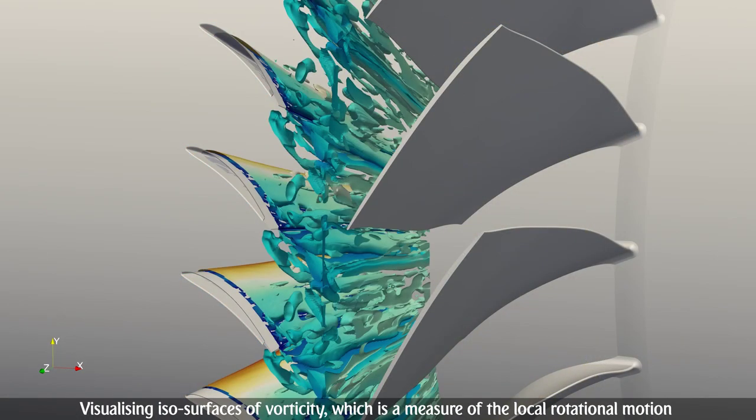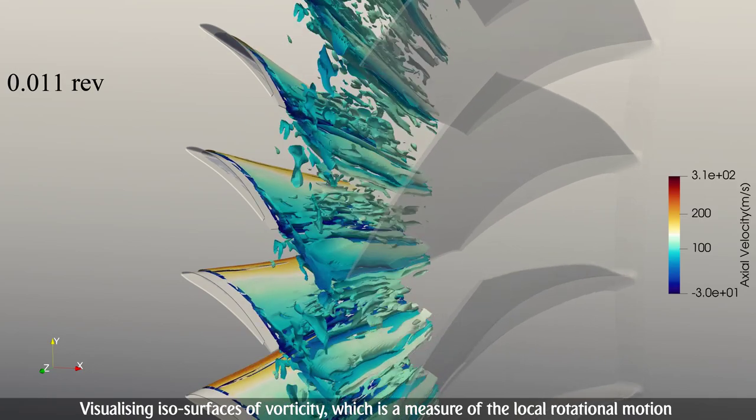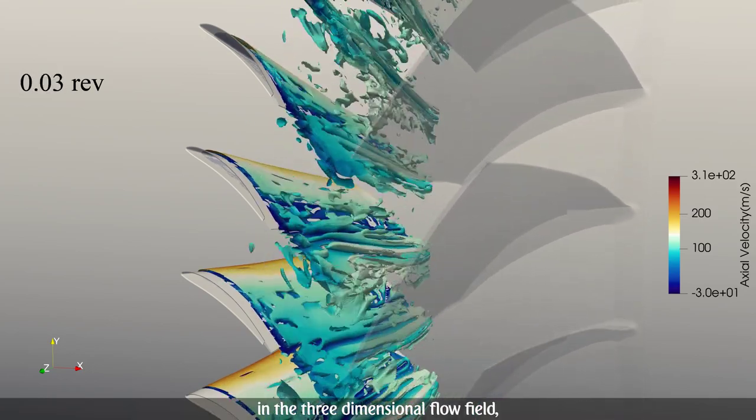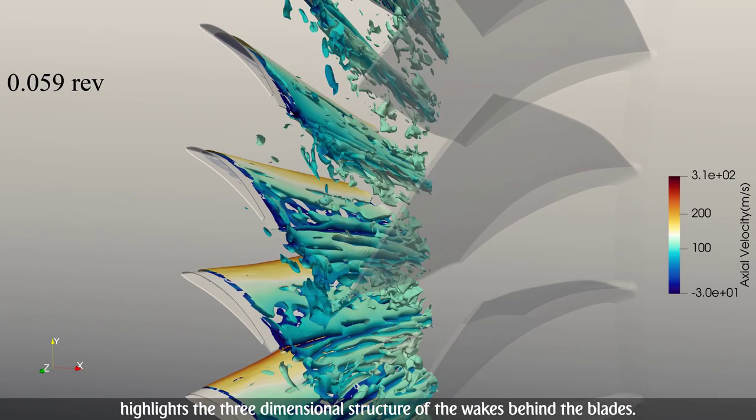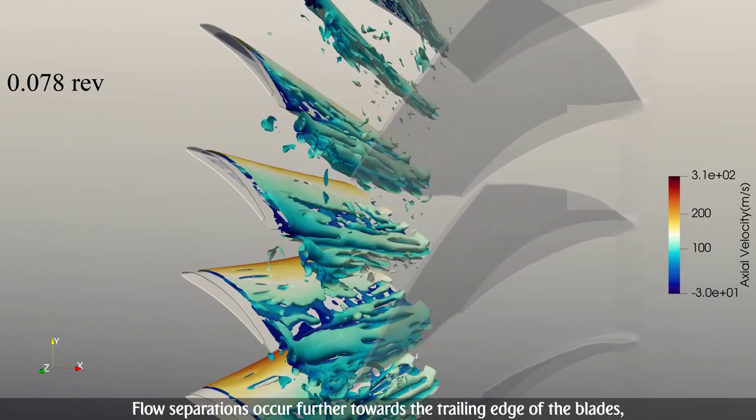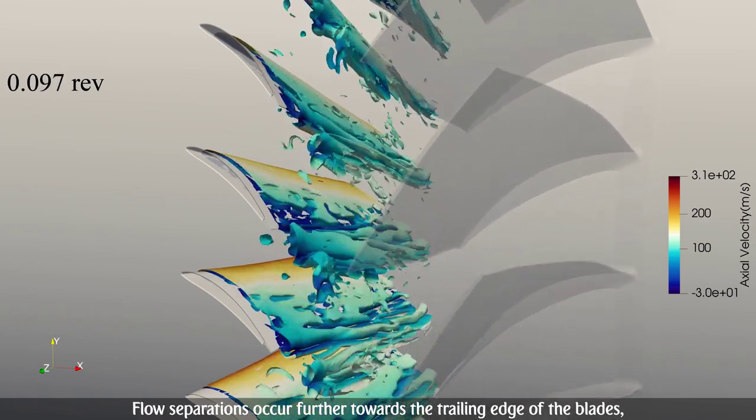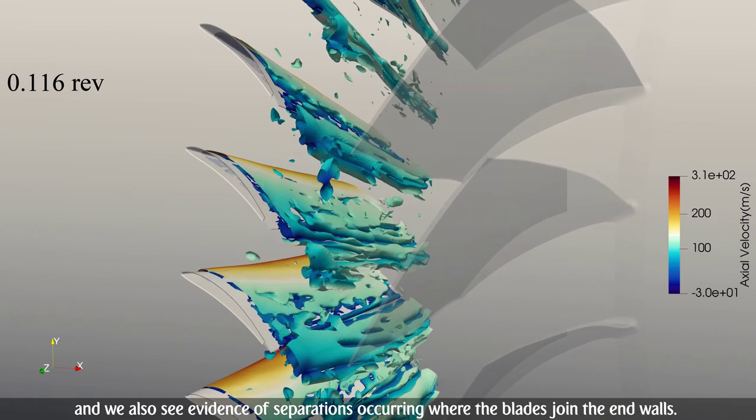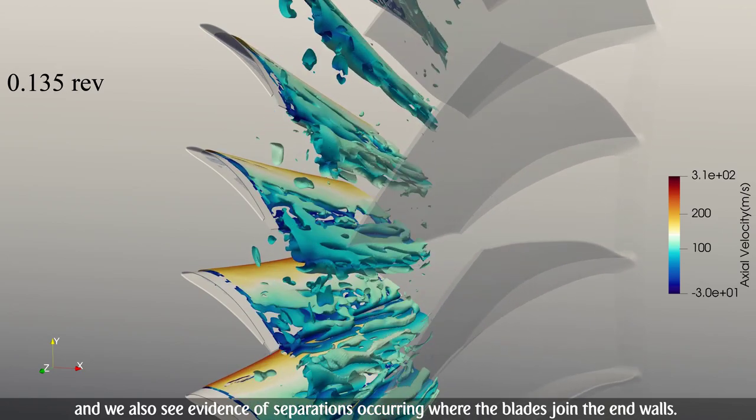Visualizing isosurfaces of vorticity, which is a measure of the local rotational motion in the three-dimensional flow field, highlights the three-dimensional structure of the wakes behind the blades. Flow separations occur further towards the trailing edge of the blades, and we also see evidence of separations occurring where the blades join the end walls.